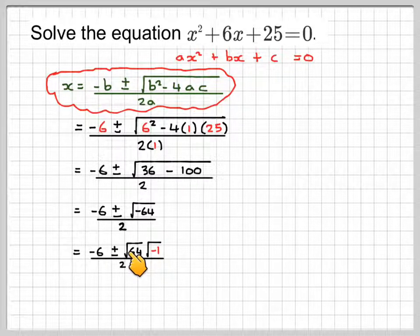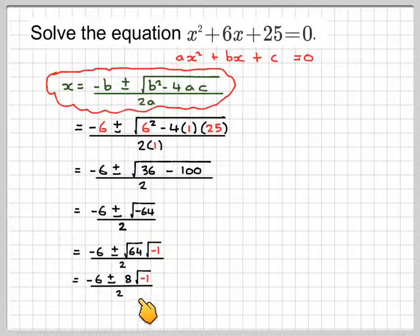Minus 6 plus or minus the square root of 64 times the square root of minus 1 all divided by 2. The square root of 64 is 8. So we're going to have minus 6 plus or minus 8 times the square root of minus 1 divided by 2.